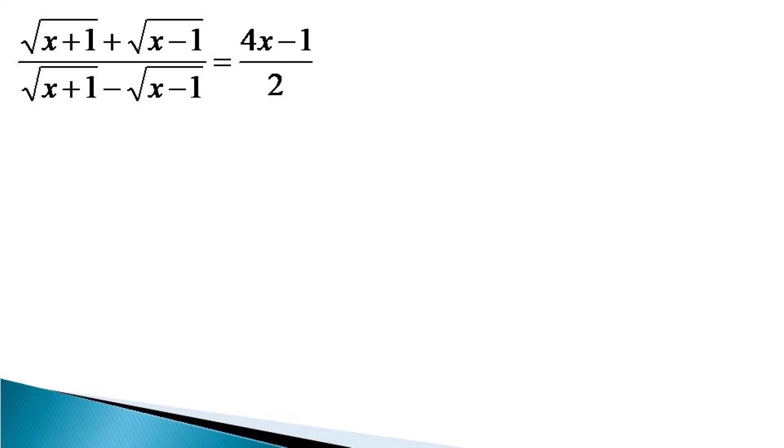Generally, equations with the presence of surds are solved by taking the square of both sides. But here, taking the square once is not going to solve the problem. We have to take the square multiple times, which will result in a polynomial equation of a higher order. So it becomes quite difficult to solve this equation.